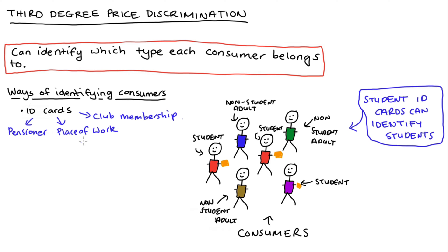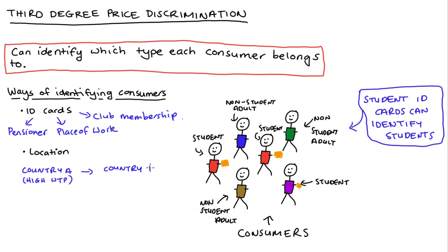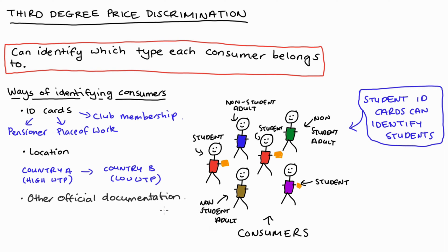Another interesting way a firm might identify consumers as being of a specific type is by location. A firm might understand that demand for their product in some countries — say country A — is high relative to another country, country B. So where the consumer lives or orders from, in the context of online sales, can indicate which type a consumer belongs to. Lastly, other sorts of official documentation can help identify consumer types — for instance, an enrollment number or even an institutional email address.